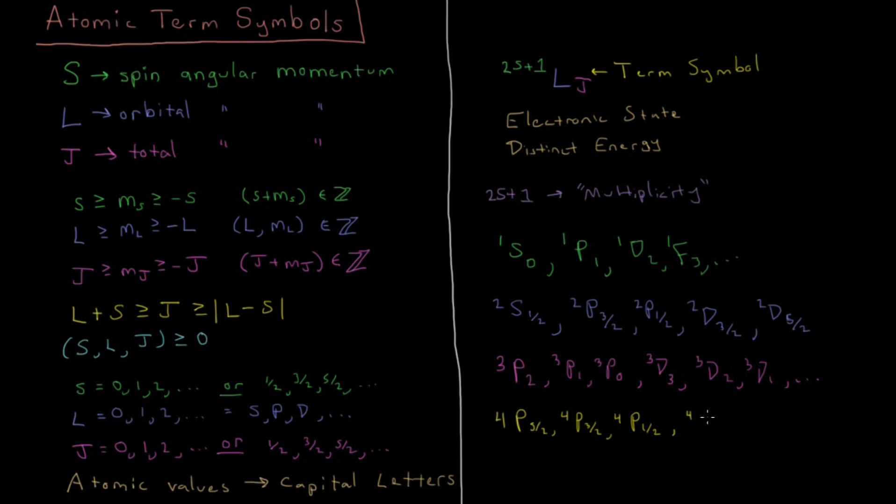Similarly for quartet s, you can do the l equals 0, and s equals 3 halves. So you can have quartet s, 3 halves, quartet s, 1 half, but you can't go below 0 there. And there would be other quartets beyond that.